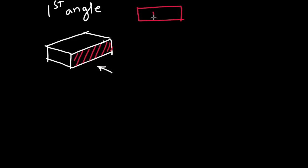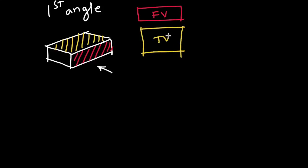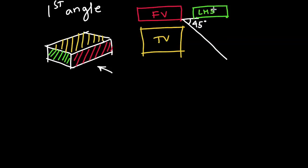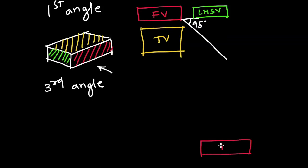Then for the top view, we'll draw it below the front view, so the top view will come below the front view. Then for the side view, we'll take 45 degrees from here. This is the left hand side view, which we are drawing on the right hand side. Remember, in first angle, LHS comes on RHS.